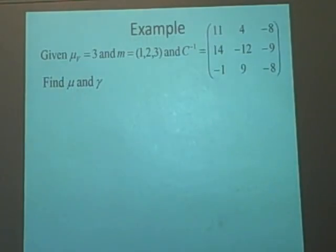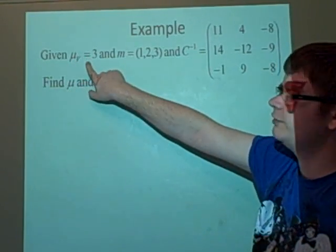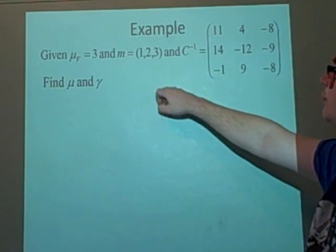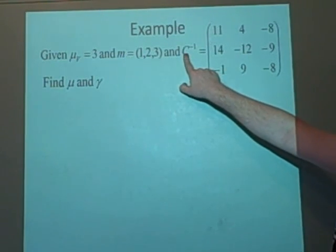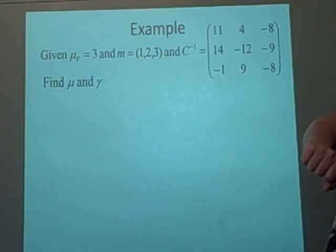Right, we've got an example coming up, as in now. And in the questions, because it can be quite long to do, they usually give you this much. So they'll give you the mu v, well we've given it here as three, we've given our m as one, two, and three. And we've got c, covariance inverse as this matrix here, which I hope you can see.